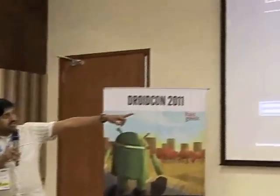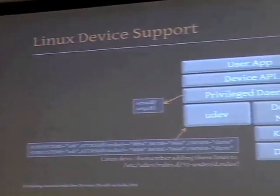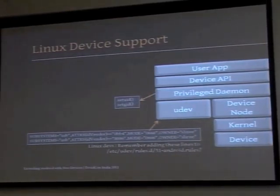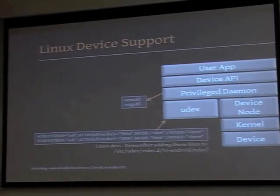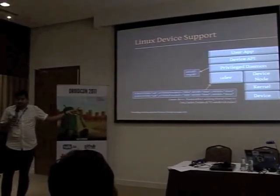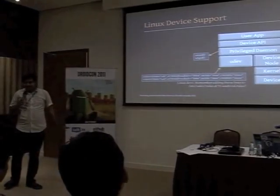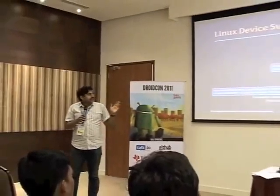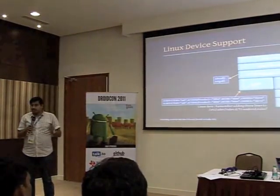How are devices supported in Linux? You have the device, the Linux kernel on top of it with all the drivers needed, and when a device is detected, device nodes are created. There's typically a privileged daemon of some sort which has access to the device node. Permissions are managed through Udev — for example, Linux-based Android developers would have the rules.d/51android rules file, which gives a regular user access to ADB functionality over USB. The privileged daemon uses setUID or setGID. On top of that you have a device API, and finally the user app which interacts with the device API.